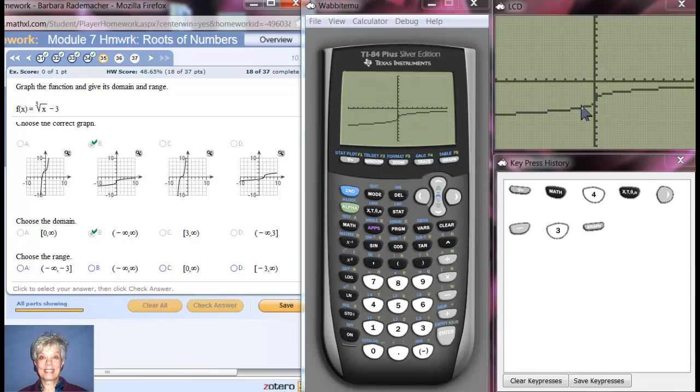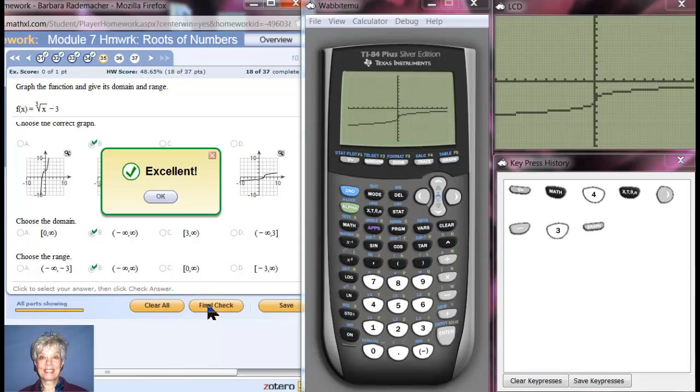And the range, well as this graph goes to the left forever it also slowly goes down forever, and as the graph goes to the right it also slowly goes up forever. So negative infinity which is down here to positive infinity up here is going to be your range. But it's a different negative infinity to positive infinity because this is on the x-axis because it's the domain, this is on the y-axis because it's the range.